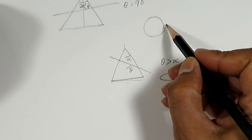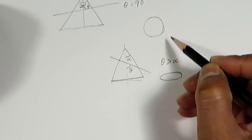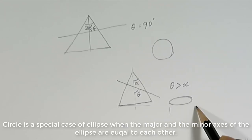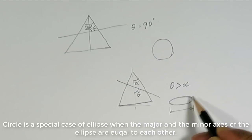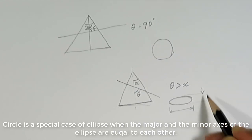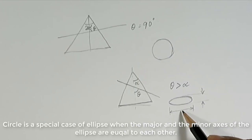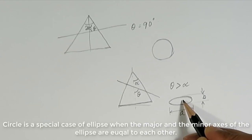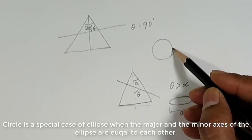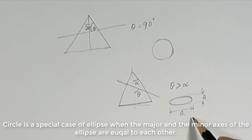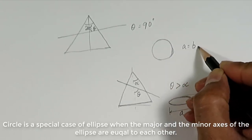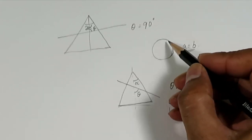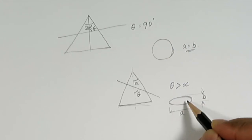As we know, a circle is a special case of an ellipse. An ellipse has two diameters — the major axis and the minor axis. When the major axis and the minor axis are equal, then it is a circle. So we can consider a circle a special case of ellipse where A is equal to B. Therefore, sometimes a circle is just considered a part of the ellipse.